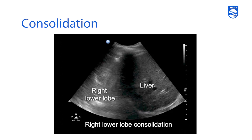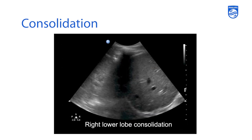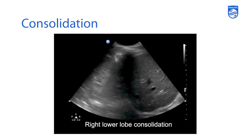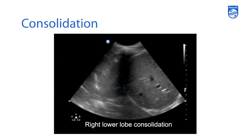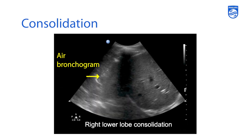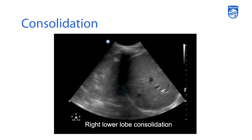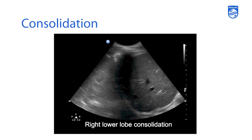Here is another example of a patient with a right lower lobe consolidation. You see liver on the right side of the screen with the consolidated lung on the left, showing a very tissue-like quality — what we call hepatization — almost to the point where it becomes hard to delineate the lung from the liver. If you look carefully at this image, you'll also see an active dynamic air bronchogram within the lung, with motion within it very classic of a patient with an infection or pneumonia as the cause of the consolidation.